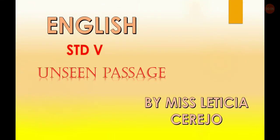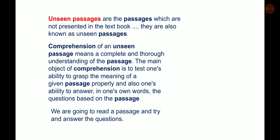English Standard 5 Unseen Passage. Unseen passages are passages which are not presented in the textbook. Comprehension of an unseen passage means a complete and thorough understanding of the passage. The main object of comprehension is to test one's ability to grasp the meaning of a given passage properly, and also one's ability to understand in one's own words the questions based on the passage.